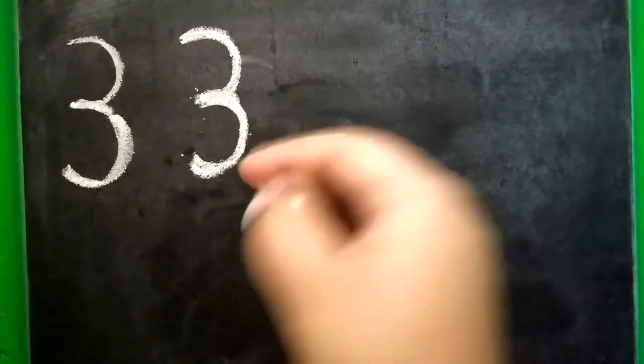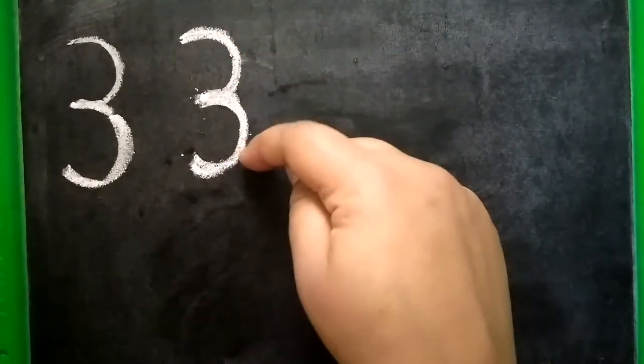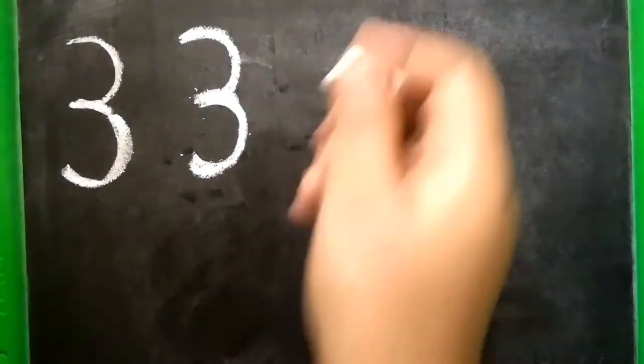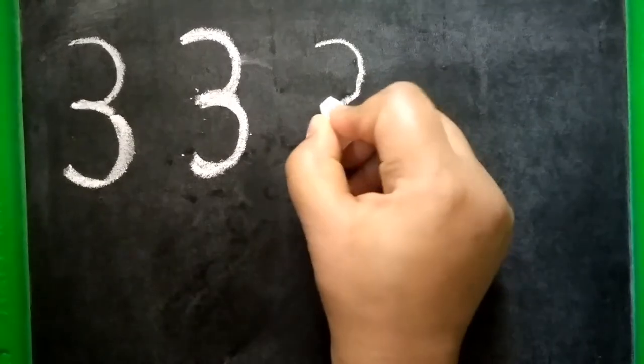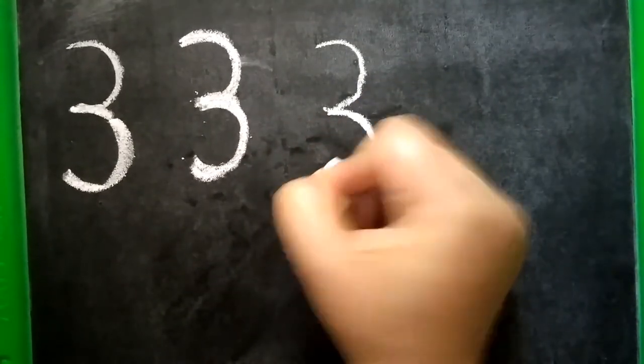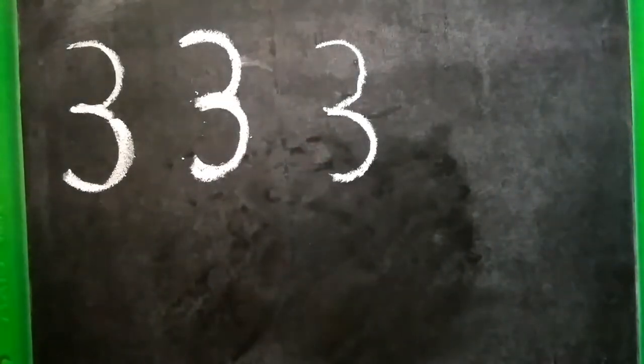How many curves we need when we write number 3? 1, 2. 2 curves makes number 3. See here again. 1 curve forward, 2 curve forward is number 3.